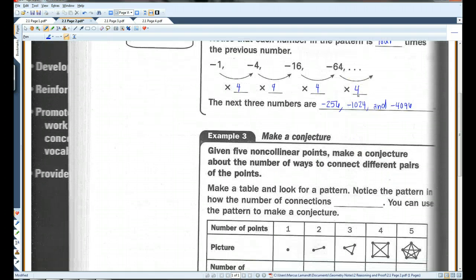Example three. Given five non-collinear points. Remember, non-collinear means that these points do not make a straight line. Make a conjecture about the number of ways to connect different pairs of points. So, we're going to make a table and look for a pattern. Notice the pattern in how the number of connections increases. You can use the pattern to make a conjecture.